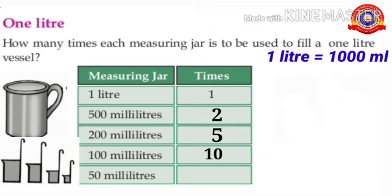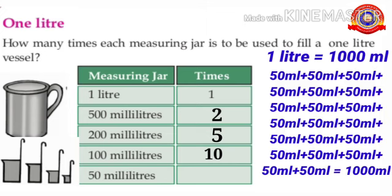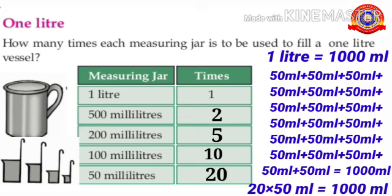See the next one. How many times do you use a 50 ml jar to fill a 1 liter vessel? How many 50 ml make 1000 ml? Yes, 20 times 50 ml make 1000 ml. So when a 50 ml jar is used 20 times, the 1 liter vessel fills up.